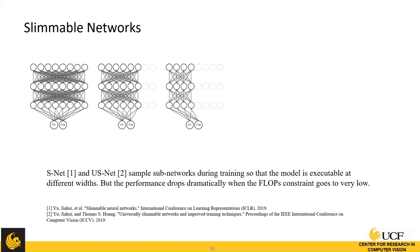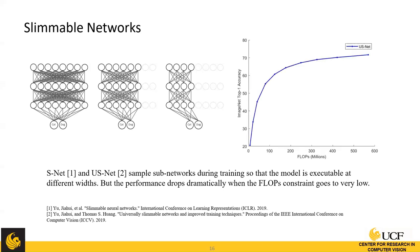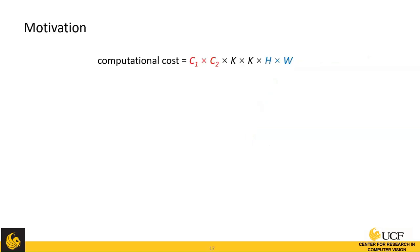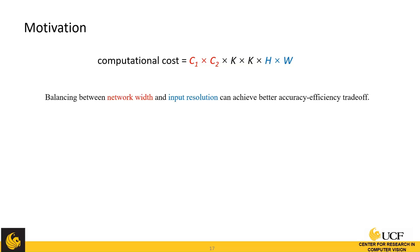Prior work on slimmable networks proposed sampling sub-networks by network width during training and training them together, so the network can run at different widths. However, slimmable networks' performance drops a lot when the width ratio goes very low — at 50% width, performance becomes unusably low. To improve the accuracy-efficiency trade-off, we note that the computational cost of a convolution layer is determined by number of channels, kernel size, and feature map size. We can balance between network width and input resolution to achieve better trade-offs.